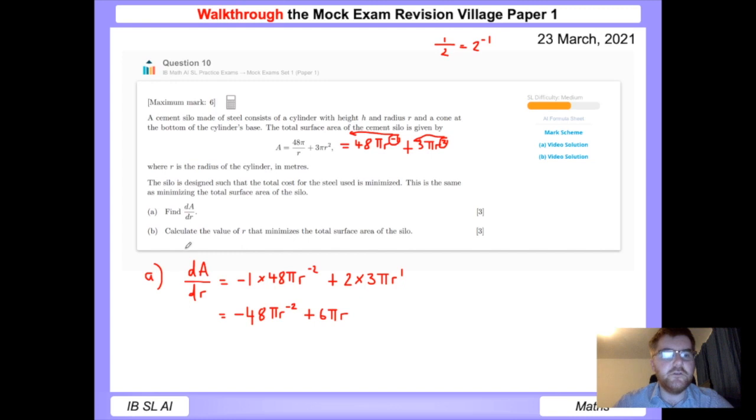Right, now we're going to look at part b. Calculate the value of r that minimizes the total surface area of the silo. This is where being on the applications course really comes into its own. The traditional way would be to take the answer we got in part a, make it equal to zero because we're looking for a turning point, and then solve for r. However, what I would recommend here is take the original function and actually put the graph into your graphical calculator and find the minimum point. I'm going to show you how to do that right now.